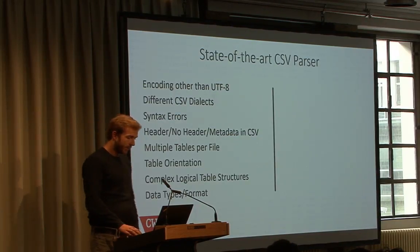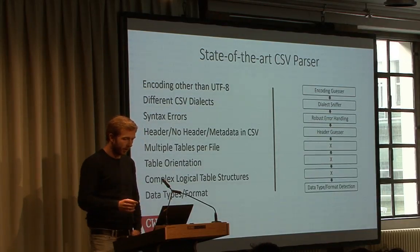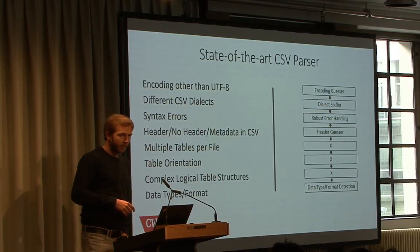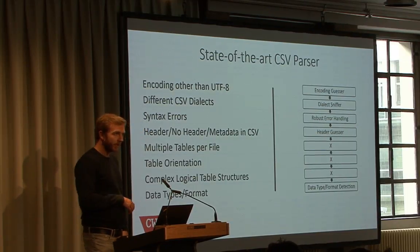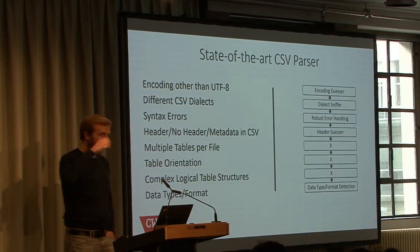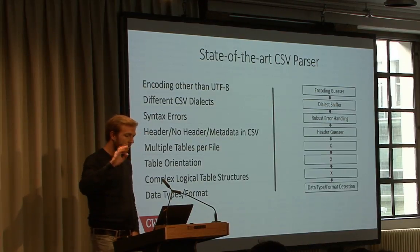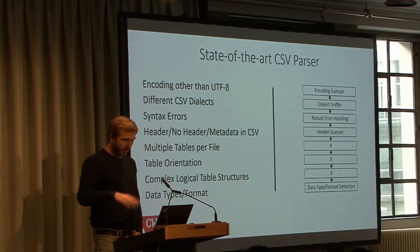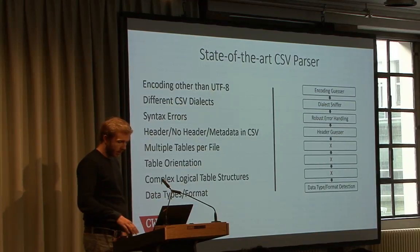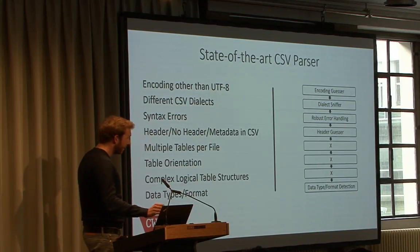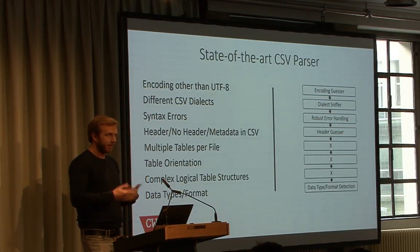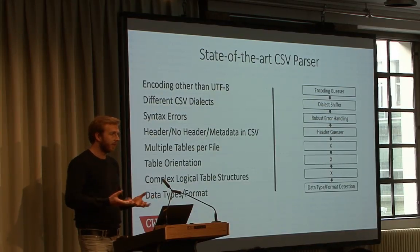If you look at what state-of-the-art CSV parsers are doing, they are already helping us: we have encoding guessing, a dialect sniffer, robust error handling, a header guesser, and data type detection. But the middle part — like having multiple tables in a file — is not covered by those parsers, because that's not what's supposed to be in a CSV file. So we can't blame the parser developers, but it means we can't do data type detection across multiple tables in one file.